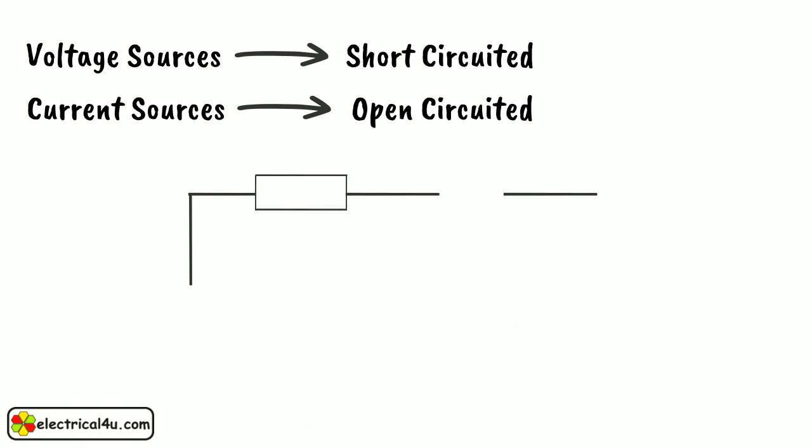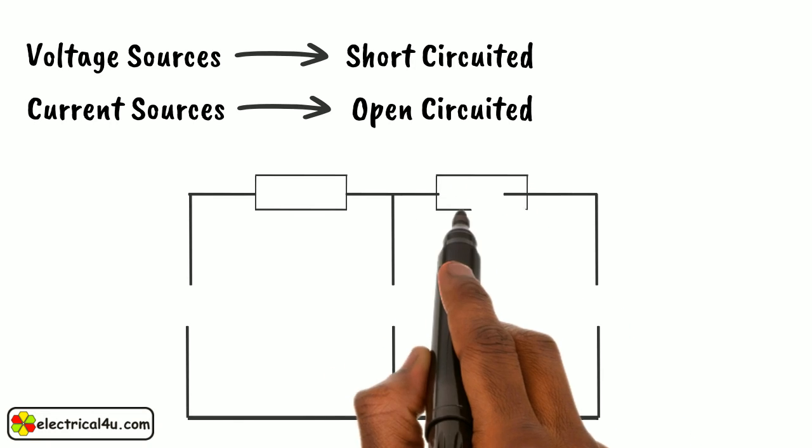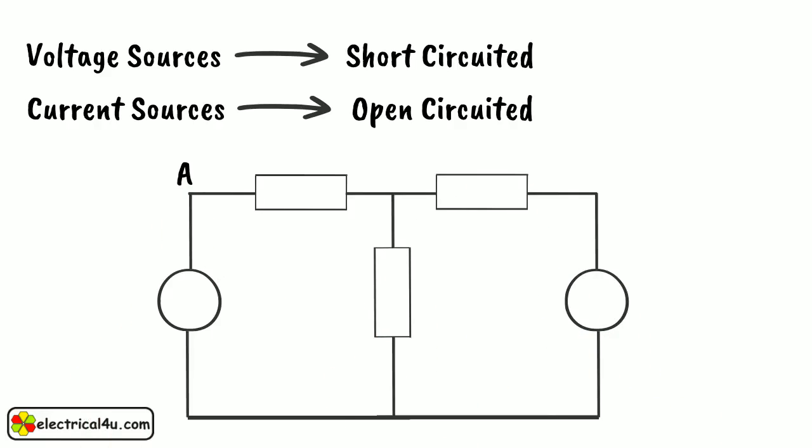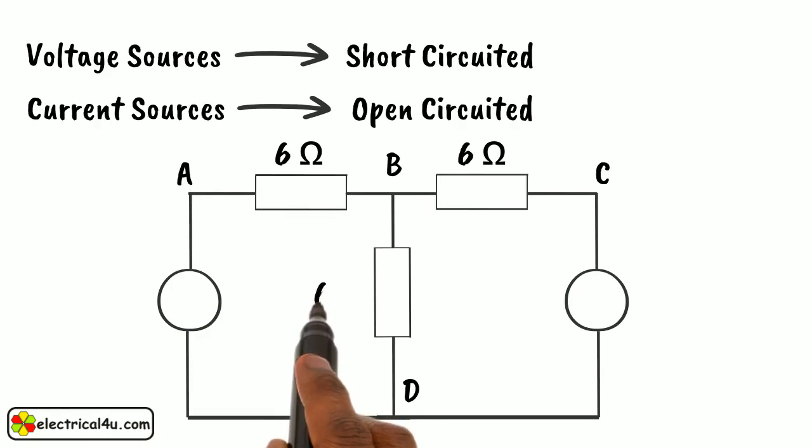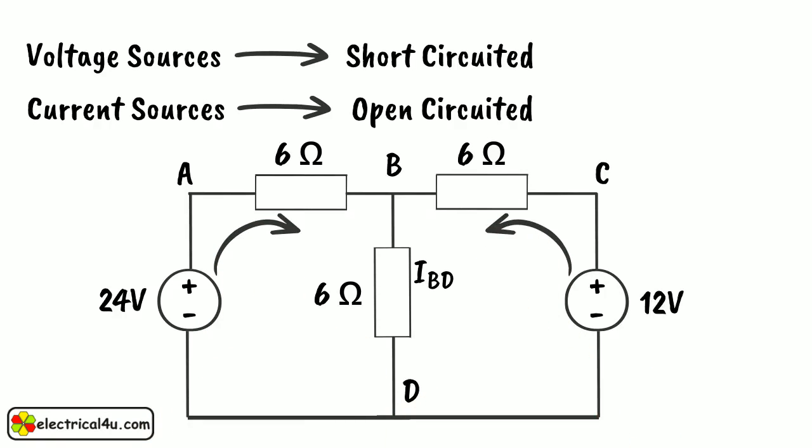To clarify the concept, let us take an example using the Superposition Theorem. Let us find the value of current in branch BD in the circuit. We shall consider each source separately and calculate the current flowing through branch BD.